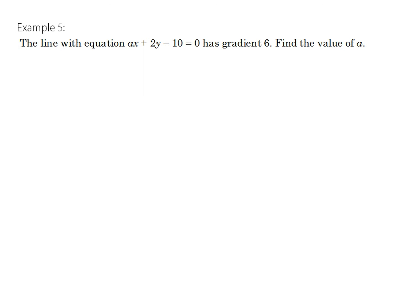In the final example, we have a line with equation ax plus 2y minus 10 equals 0 and we're told it has a gradient of 6. As a side note, if instead we were told the line passes through the point (5, 8), we could substitute x equals 5, y equals 8 into the equation to solve for a directly. But here we're given the gradient, not a point.